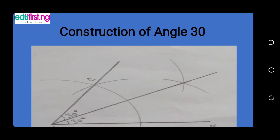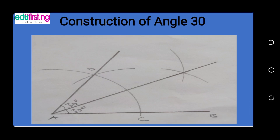We now move to the construction of angle 30 degrees. To construct angle 30 degrees, you bisect your angle 60 degrees. Assume angle 60 is already drawn. Bring the pin of your compass to D and draw the first arc, then carry the pin to C and draw the second arc. Where the two arcs intersect, rule a line that meets at A. You have now bisected angle 60 degrees, giving you 30 degrees and 30 degrees.